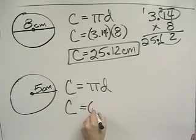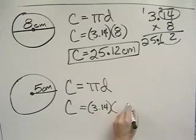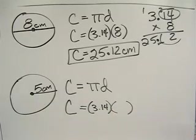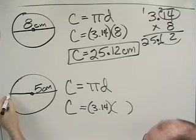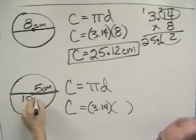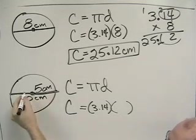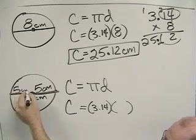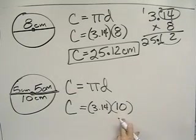Now this time, d is not 5. The 5 is only the radius. I need the entire diameter, which is 10 centimeters, because we've got 5 going this way and 5 going this way for a total of 10. So the diameter is 10.